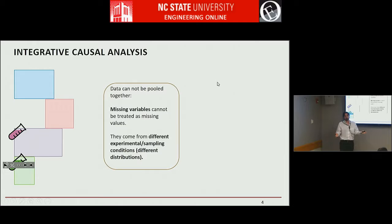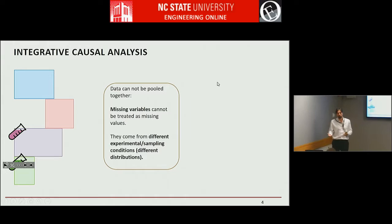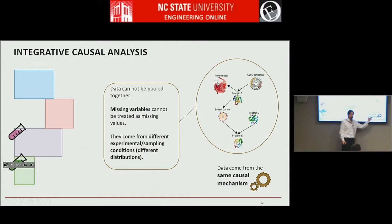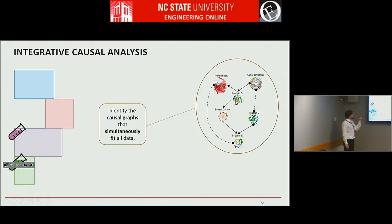In statistics, these are called missing by design because we never thought about measuring them. You also have different experimental conditions, or in some cases different sampling conditions. Some data sets may be case control, some other may be cohort studies. You cannot pull them together, but they have a common thing — they come from the same causal mechanism. The distribution is different, but the causal generating mechanism is the same.